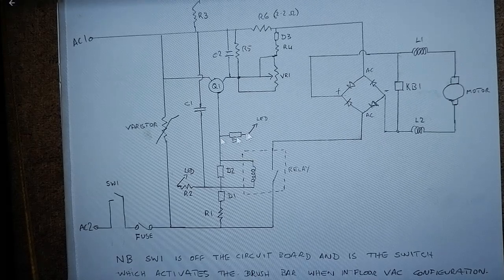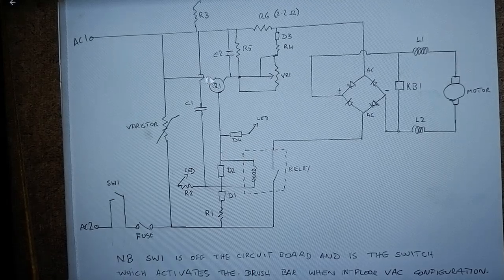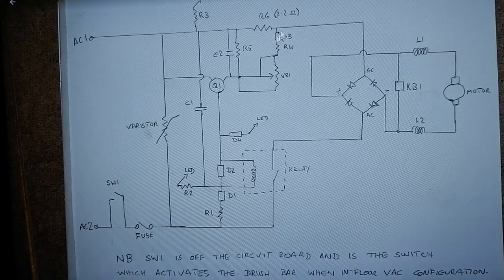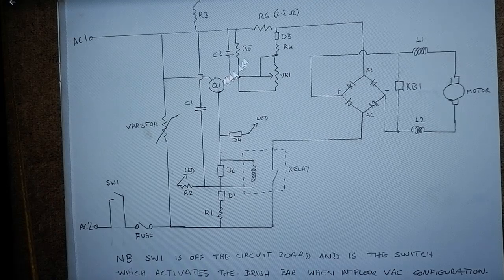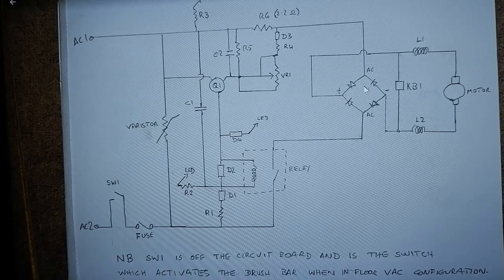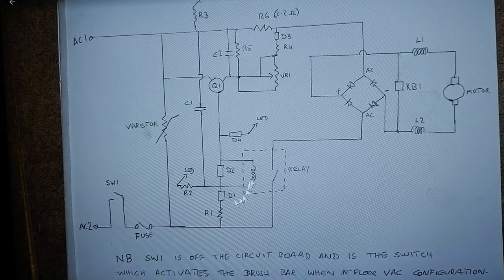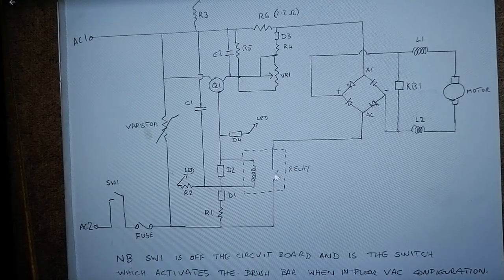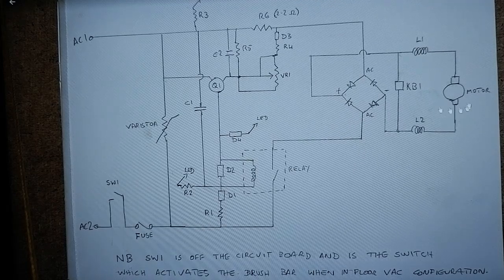So basically what happens is that this is the sense resistor that I mentioned when showing the circuit board, 2.2 ohms. And when the transistor recognizes that the voltage across this resistor has got too high, indicating that the current going to the motor is too high, then it will switch off and de-energize this coil here. And when the coil is de-energized, this switch will open and the AC can't get up this wire towards the motor. So the motor is disconnected.